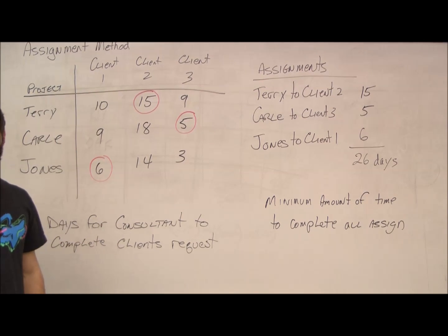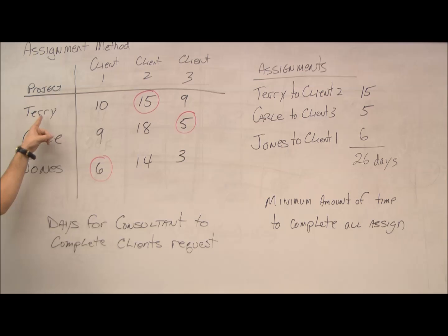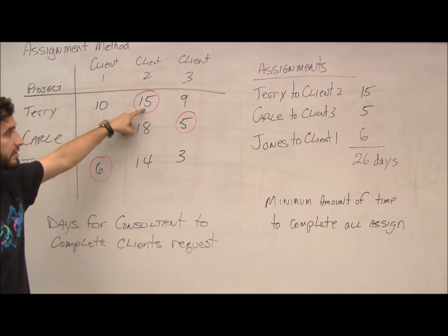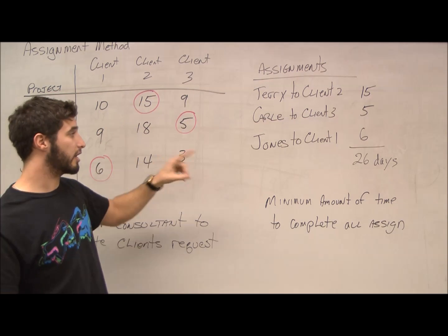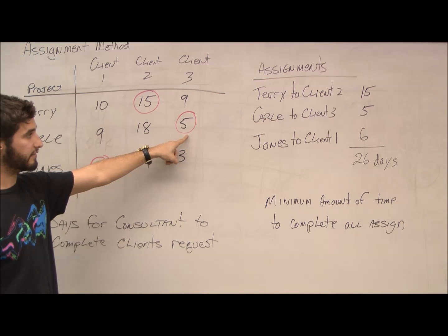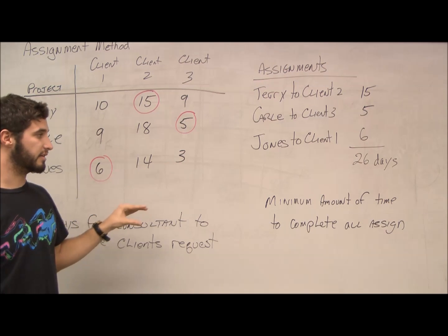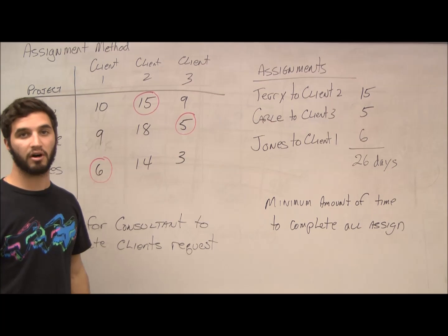So after our assignments, we're going to move back to the original table. As you can see, Terry was moved to client 2. So on the original table, Terry to client 2 takes 15 days. Carly was moved to client 3. So Carly to client 3, which takes 5 days. And then Jones to client 1, which takes 6 days. And the sum represents the minimum amount of time to complete all of the assignments.